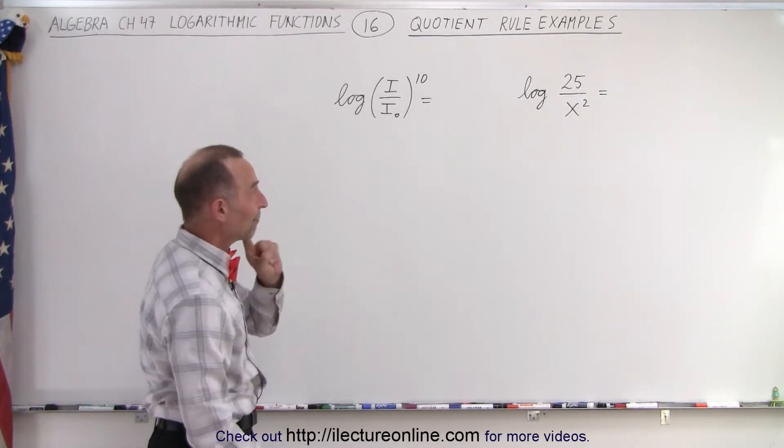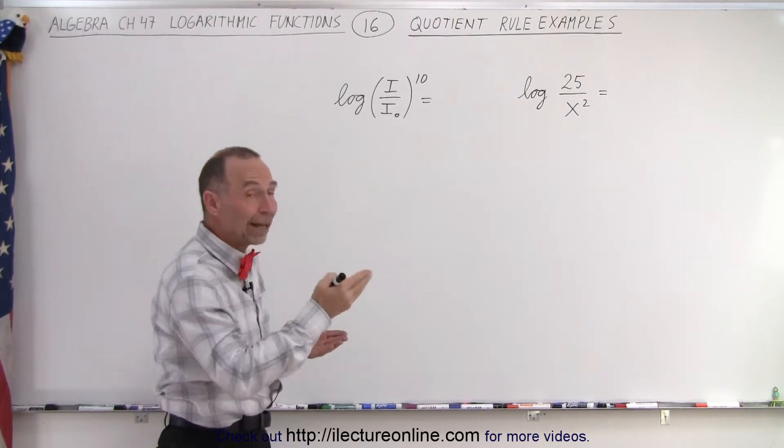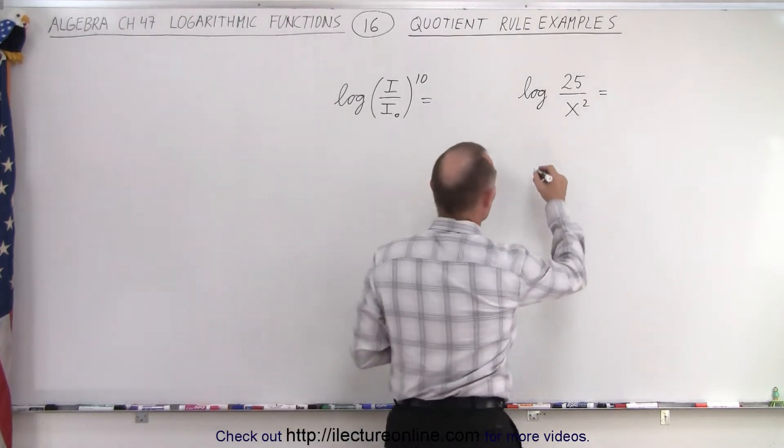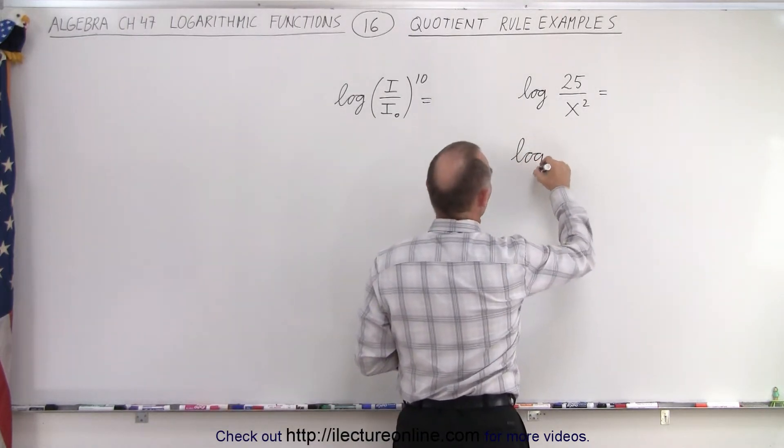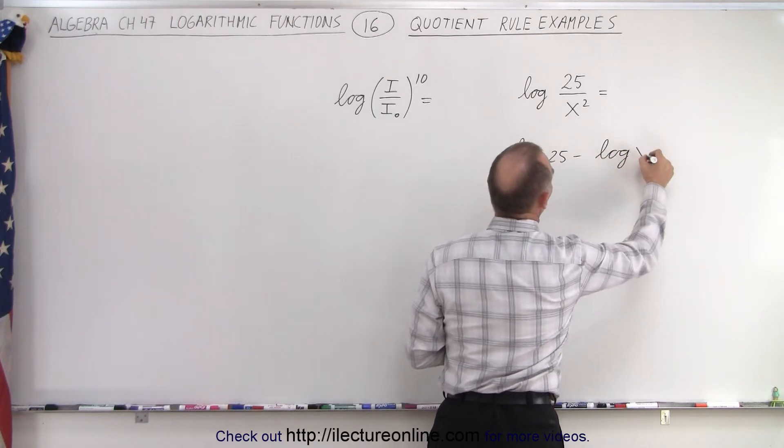Alright, so here we have the rule that says if we take the log of a quotient, we take the log of the numerator minus the log of the denominator. So this can be written as the log of 25 minus the log of x squared.